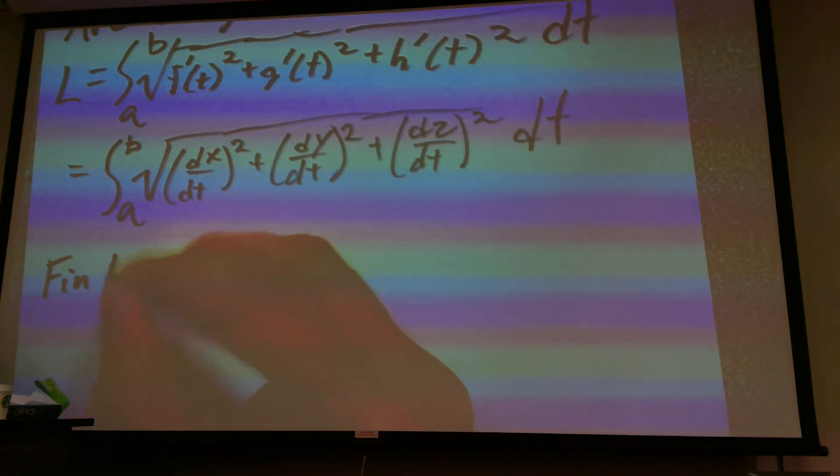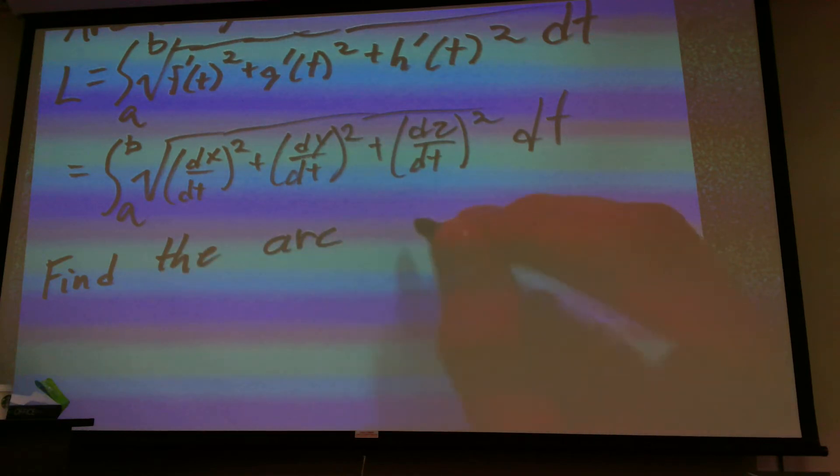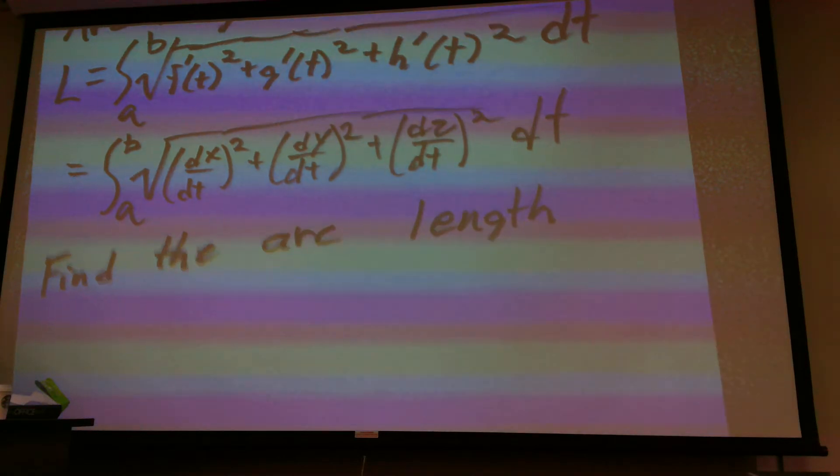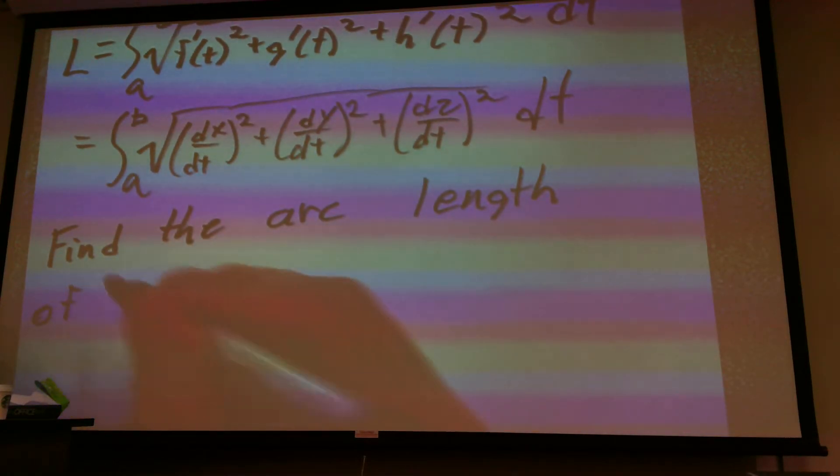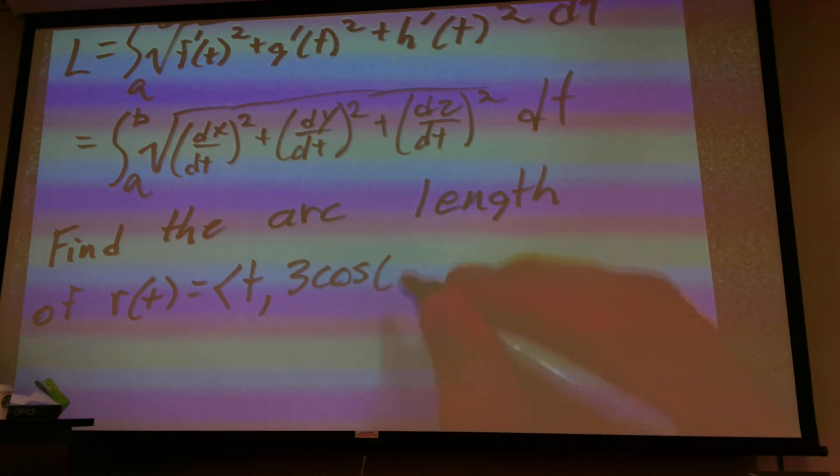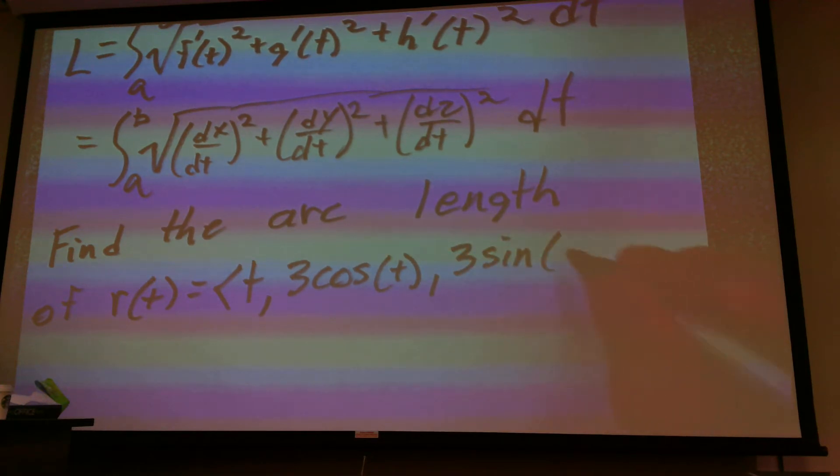this is the same formula just written in a slightly different format. And so let's say we want to find the arc length. We're going to say r of t, which is going to equal now t, three cosine of t, and three sine of t.